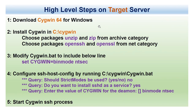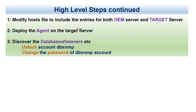To summarize the steps on the target server: download, install, modify the bat file, configure, and start. Then we will add host entries for both the OEM server and the target server in the etc hosts file on both machines. From OEM, we will deploy the agent to the target server and then discover the database and listener.